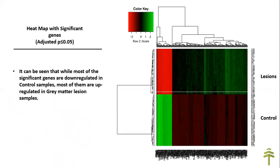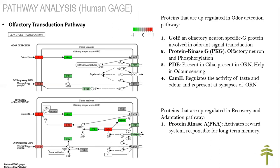This heatmap shows significant genes. From the dataset I extracted significant genes with an adjusted p-value less than 0.05. Most of the significant genes are downregulated in control samples and upregulated in gray matter lesion samples. This heatmap was an indication we were going on the right pathway. To understand the biological implication of these significant genes, the gene lists were uploaded to the tBioInfo server, and KEGG pathways were considered for the observation of upregulated and downregulated genes in gray matter lesions.